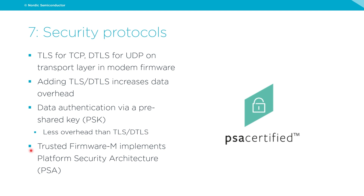We have TLS for TCP and DTLS for UDP on the transport layer in the modem firmware. Adding TLS or DTLS does increase the data overhead — you're adding security but also more overhead. Instead of TLS/DTLS, you can also use data authentication by a pre-shared key, which has less overhead and can be a good middle pathway if you want security with less overhead.